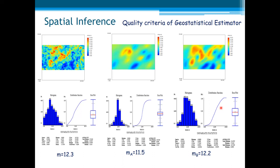Now, as you can see, since you know the reality, you can compare those two models obtained with different sets of samples. You can notice that the second model, model B, is richer — we can obtain those patterns that we cannot reach with the poor sample set used for model A.